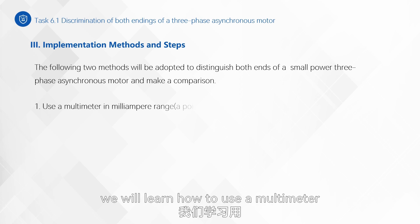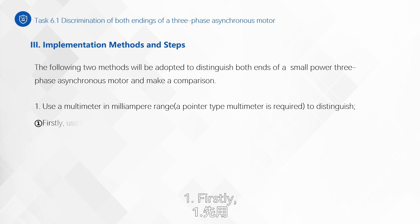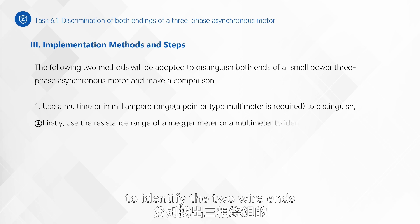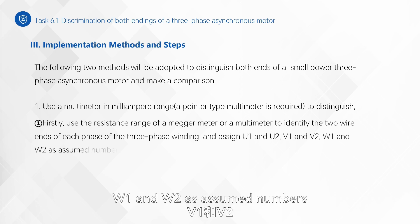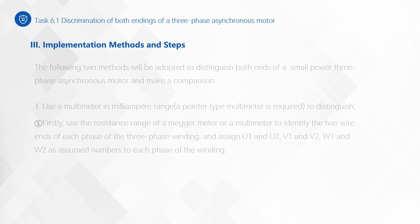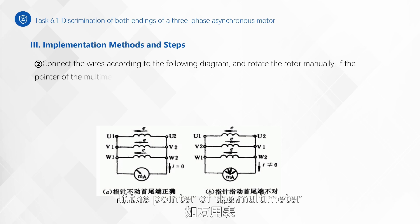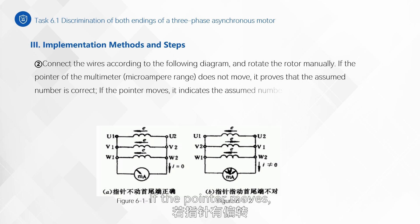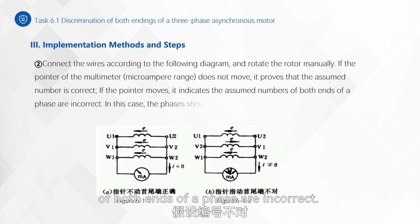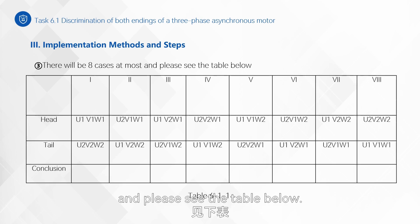Method one: use a multimeter in the milliampere range — a pointer-type multimeter is required — to distinguish. First, use the resistance range of a megameter or multimeter to identify the two wire ends of each phase of the three-phase winding and assign U1 and U2, V1 and V2, W1 and W2 as assumed numbers to each phase. Second, connect the wires according to the diagram and rotate the rotor manually. If the pointer of the multimeter in the microampere range does not move, it proves the assumed number is correct. If the pointer moves, it indicates the assumed numbers of both ends of that phase are incorrect, and the phases should be readjusted and retested one by one until the numbers are correct. There will be eight cases at most — please see the table.